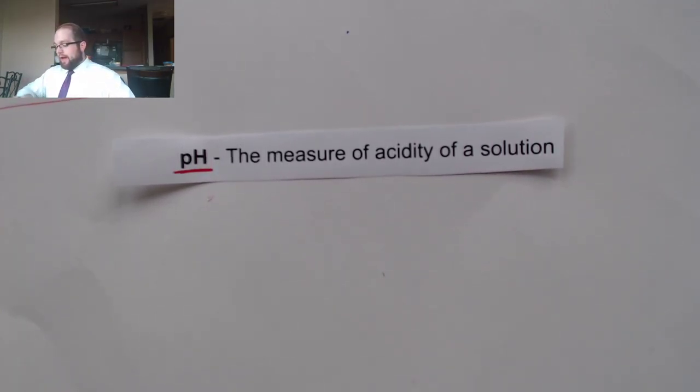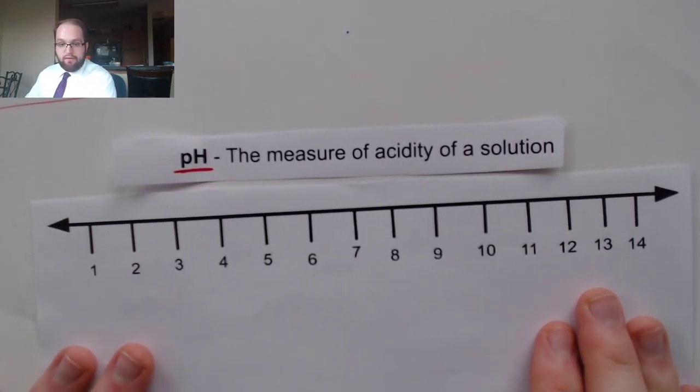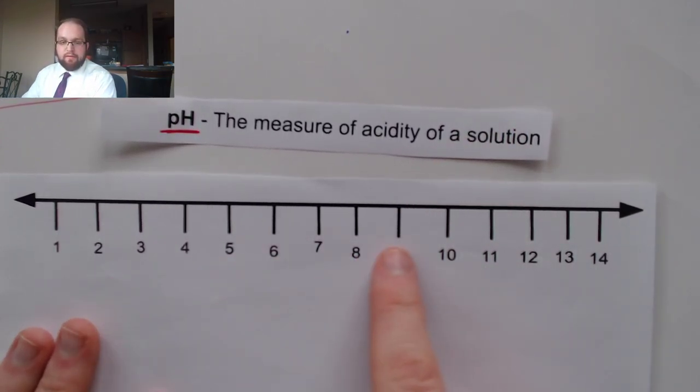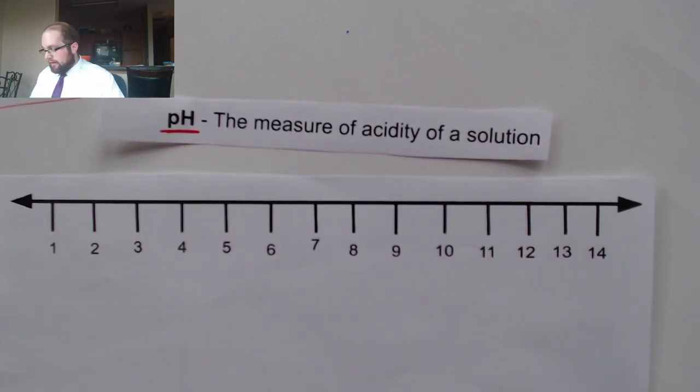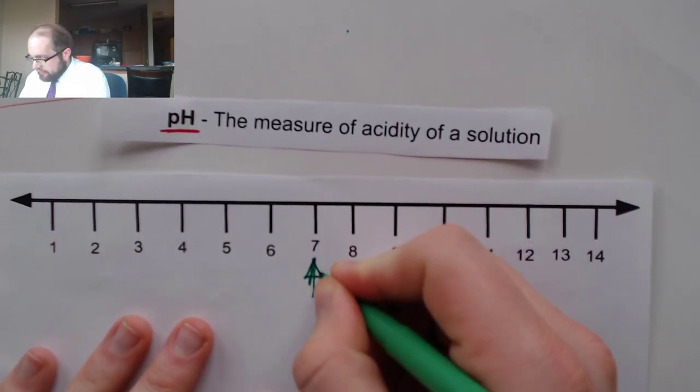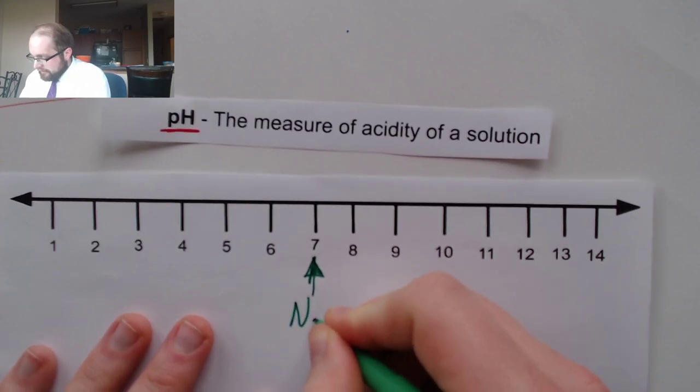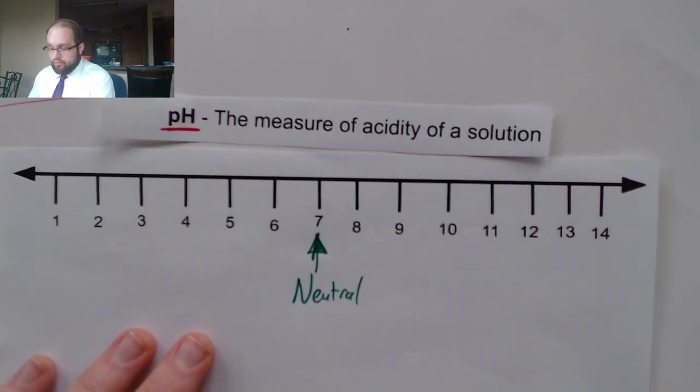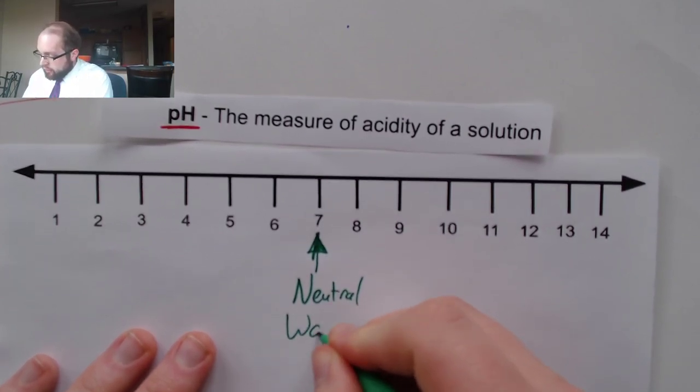And I want to talk about the pH scale. The pH scale is again something you might have heard of before. But it's a range of acidity from 1 to 14. Things that are neutral are at the very middle of this scale. So at pH of 7 this is where you have something that is neutral. The most common example of a neutral compound would be water.